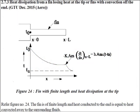Let's start with this current case. The fin is attached to a surface at temperature T₀, so at x = 0 the temperature equals the base temperature. At x = L (the total length of the fin), as shown in figure 24, all the conducted heat is dissipated to the surroundings by convection — that is, Q_conduction equals Q_convection.